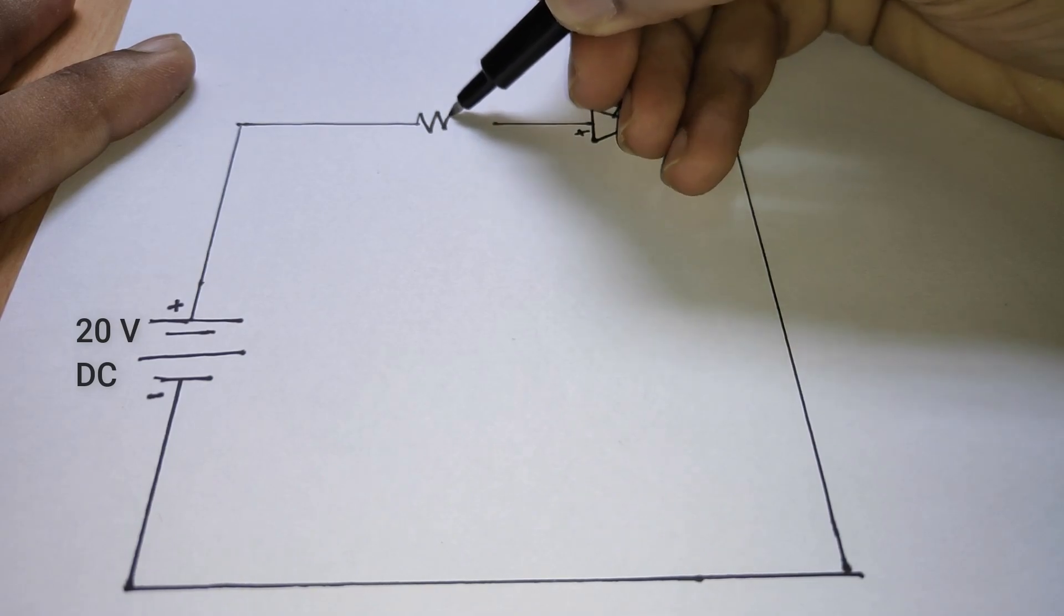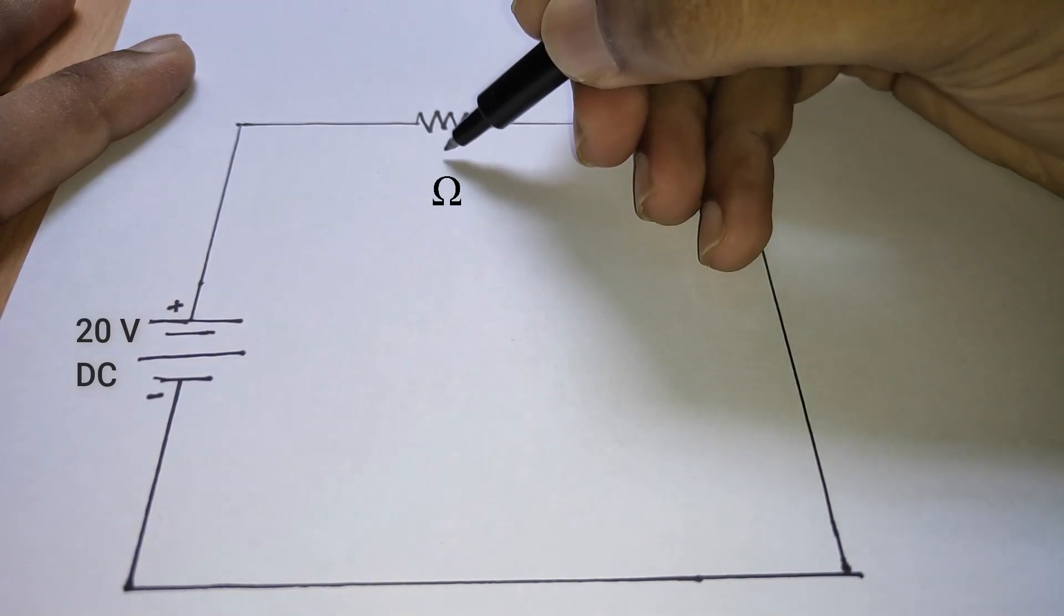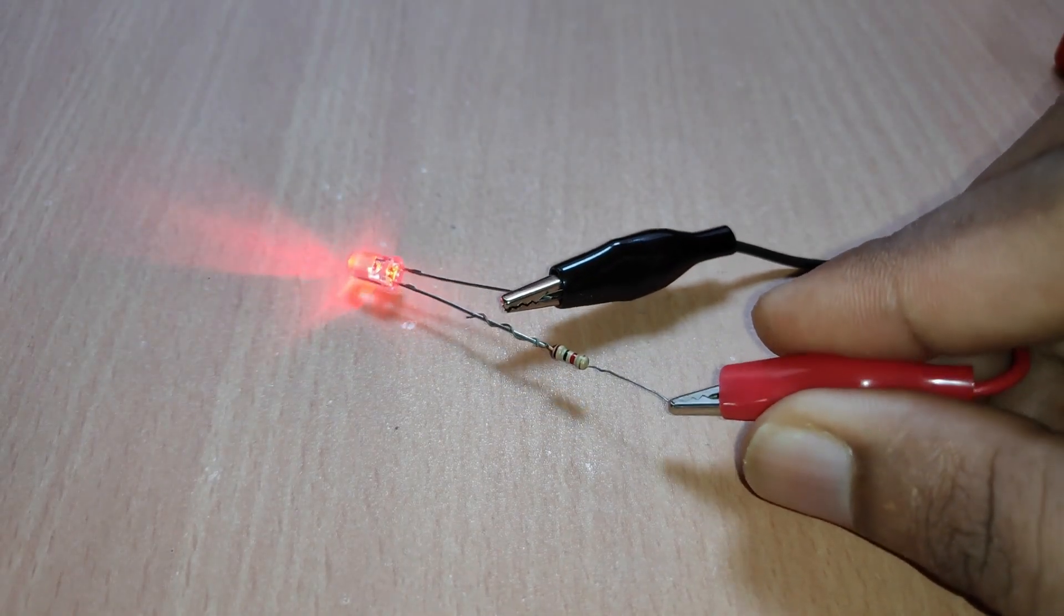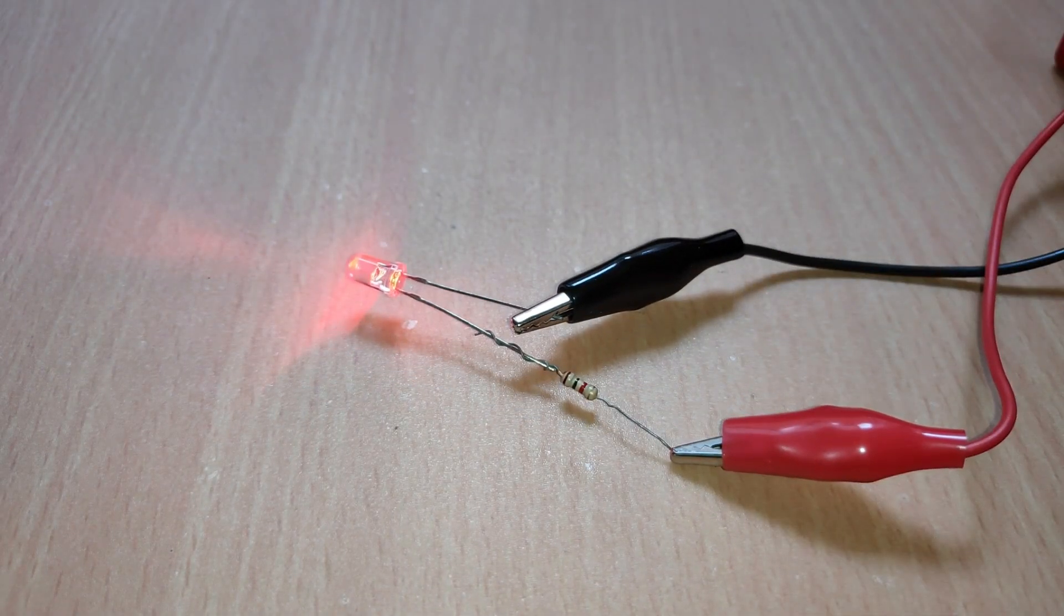For the circuit, we can place the resistor in series anywhere between the source and load. Now by connecting the same 20 volts, the LED lights up perfectly without getting destroyed.